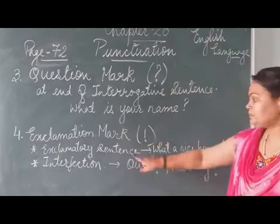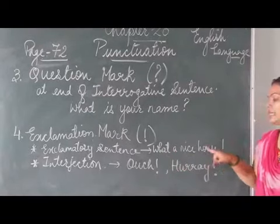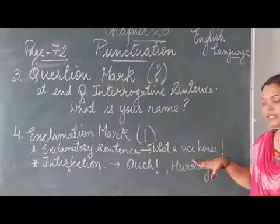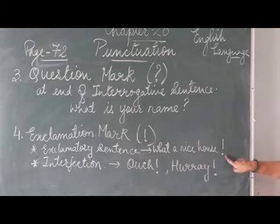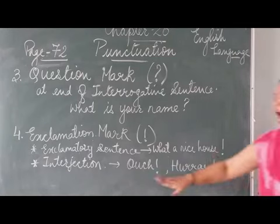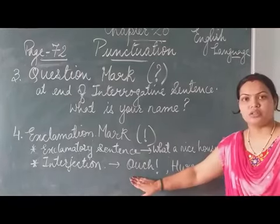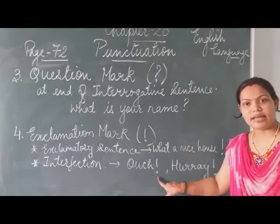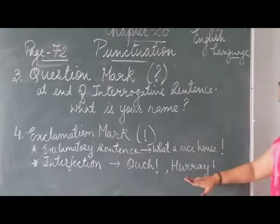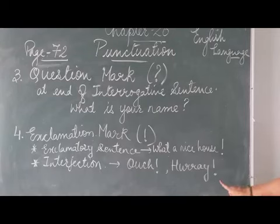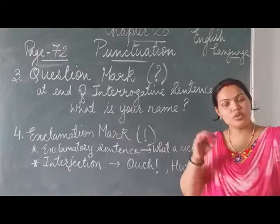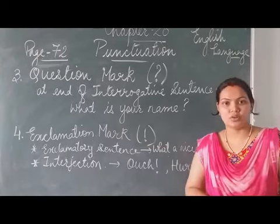For example, 'What an idea!' — this is your exclamatory sentence, so at the end I have used an exclamation mark. 'Ouch!' — this is your interjection, so here there is an exclamation mark. 'Hooray!' — after hooray there will be one exclamation mark. 'Wonderful!', 'Bravo!' — so all these are your interjections.